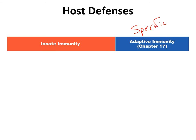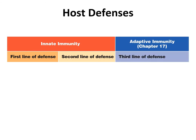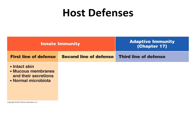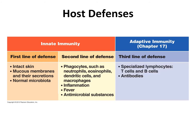Your immune system is further divided into lines of defense. The first line of defense and second line of defense are part of your innate immune response, while the third line of defense is basically your adaptive or specific immune response. First line of defense involves keeping microbes out of your body. Second line of defense are your initial defenses inside your body when microbes have entered your tissue. Third line of defense is where specialized cells respond to the particular microbe that has colonized your body.